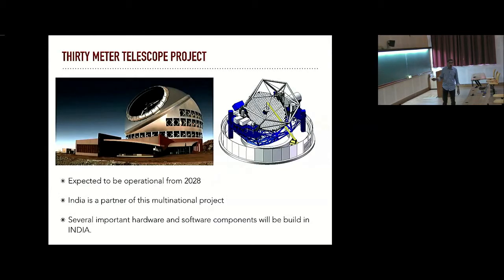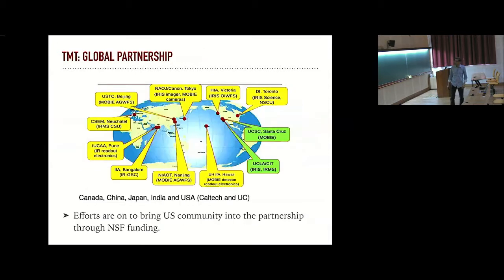Basically, 30 meter telescope project is expected to be operational in 2028, a rough number. You can think of like late next decade. And as a partner of this, we have about 10% share in this thing. Several important hardware and software components which are required to make this thing are built here in India. In fact, literally here in Bangalore. Bangalore is the sort of center here.